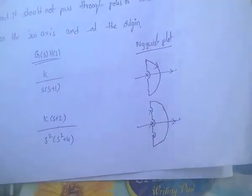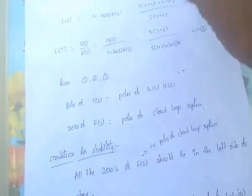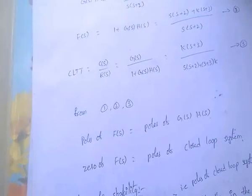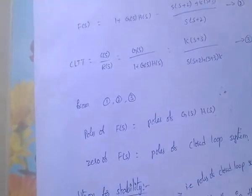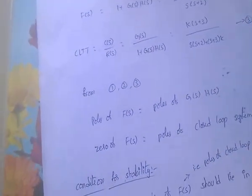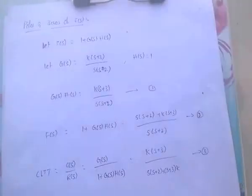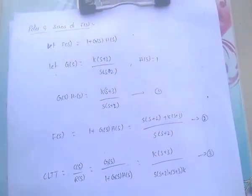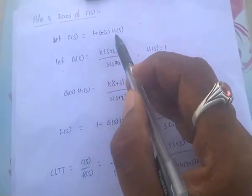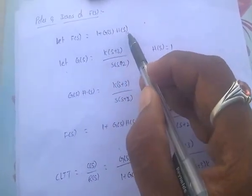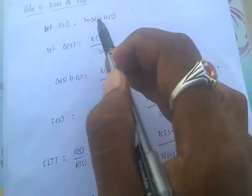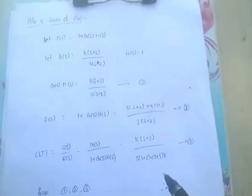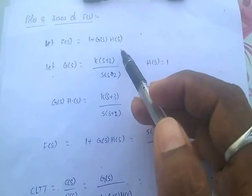This is the Nyquist plot. Coming to the poles and zeros of F(S): F(S) is nothing but 1 plus G(S)·H(S).